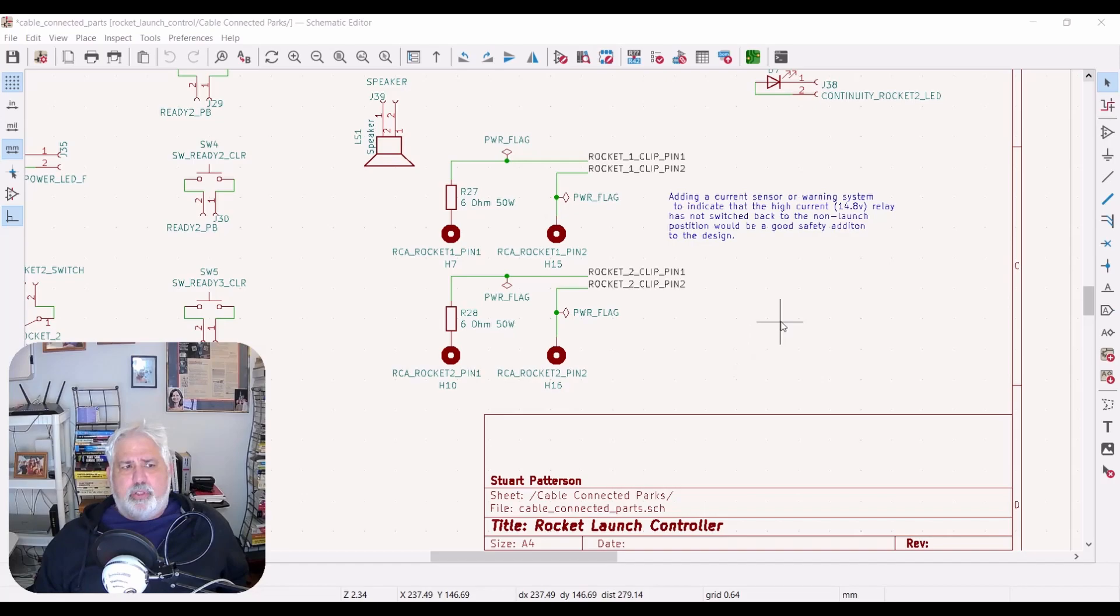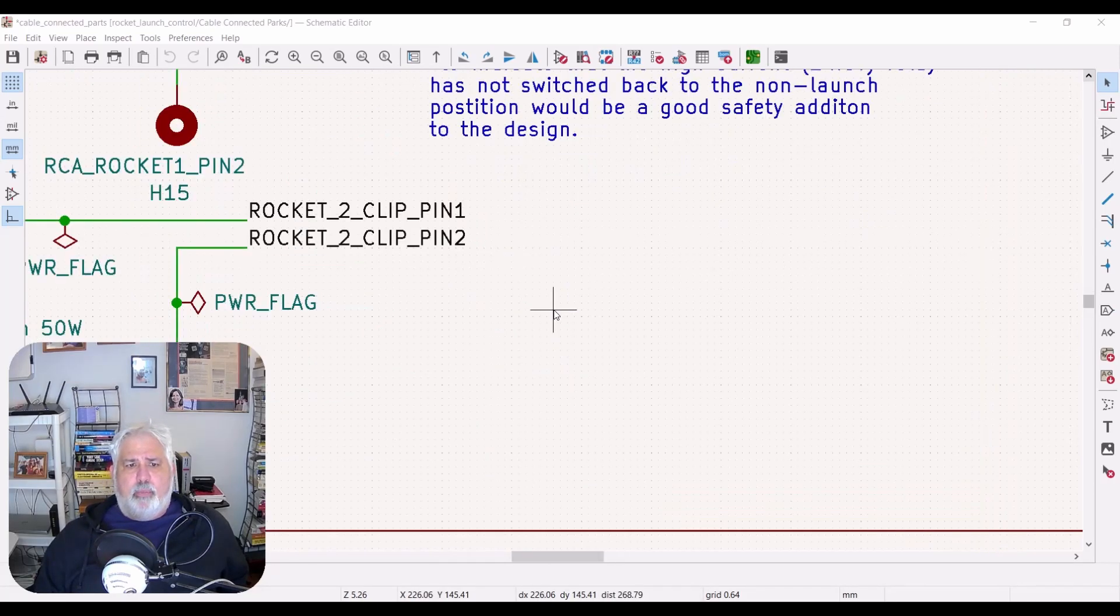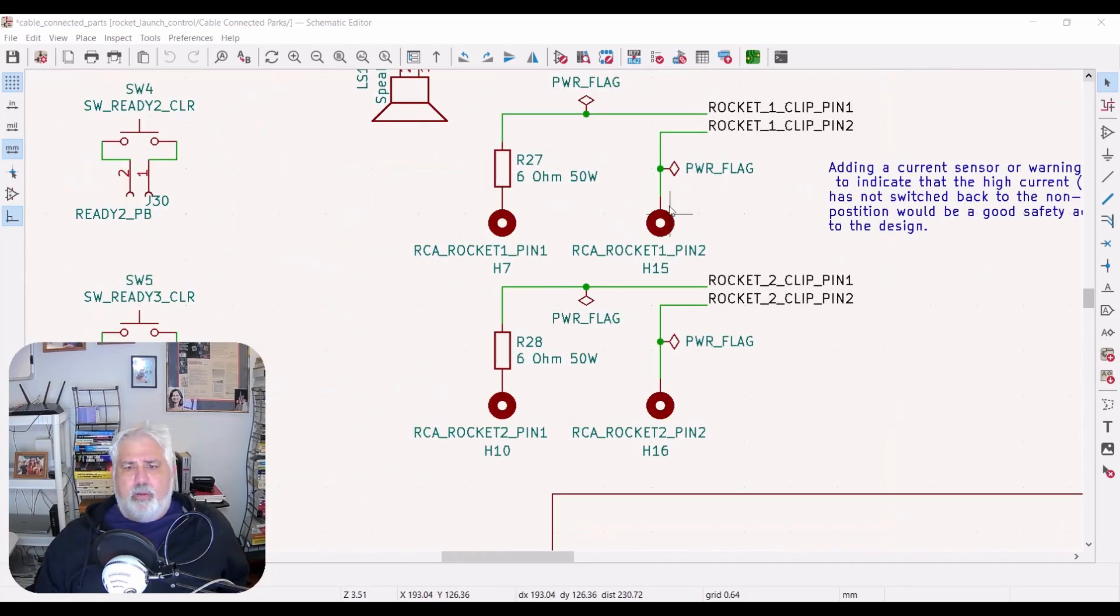I want to draw your attention to the original schematics. This is the second page, which shows a lot of the wiring, external wiring. If we draw our attention to R27 and R28, you'll see here, these are the clips that go out to the igniter for the rocket. R27 and R28 are 6-ohm 50-watt resistors. And I put them in there to limit the current to about 2 amps, depending on your voltage source. And it does seem as though those larger Estes engines require more than that for a very short period of time.